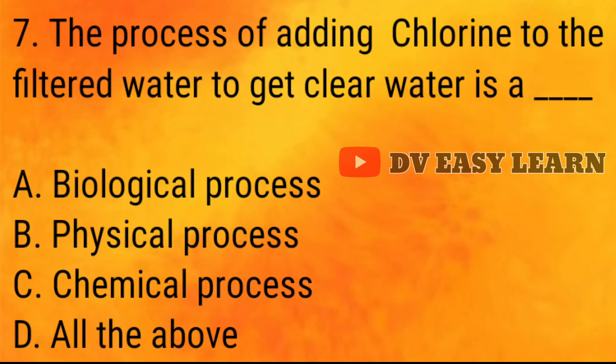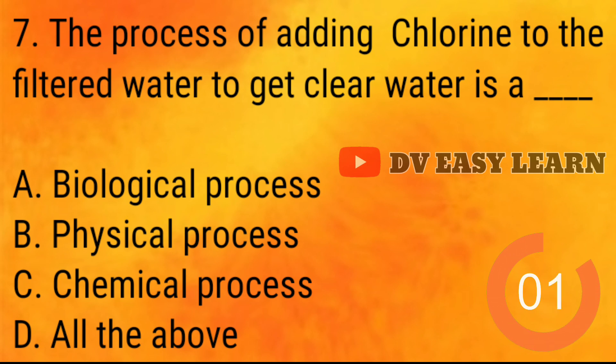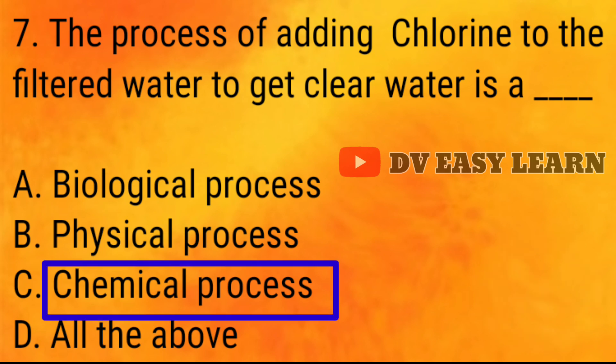Q7: The process of adding chlorine to the filtered water to get clear water. Correct answer: Chemical process.